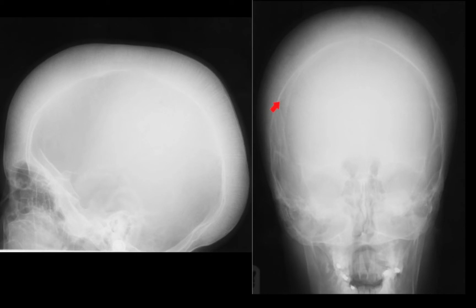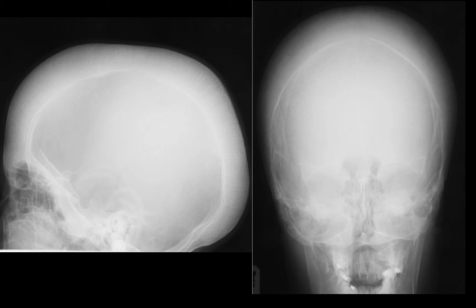The typical hair-on-end appearance — you can see the inner table nice and sharp. Here's the hair-on-end appearance, which is expansion of the diploic space, and the outer table is thinned such that you can't see it very well. This is a typical patient with intramedullary hematopoiesis giving the so-called hair-on-end appearance in a case of thalassemia.